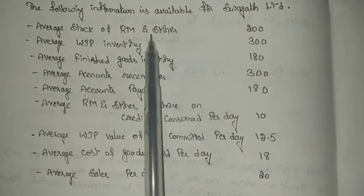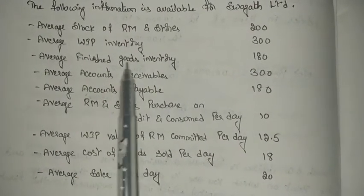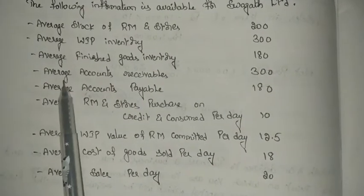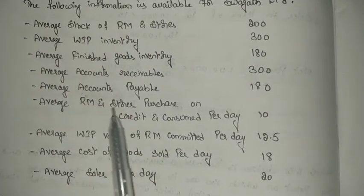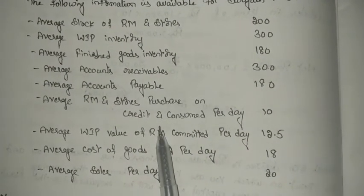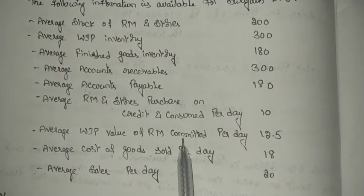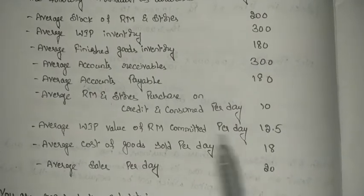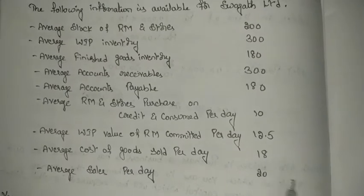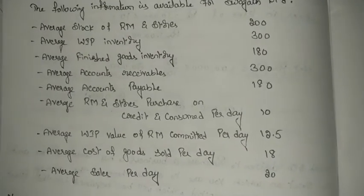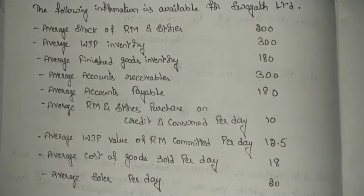The given data includes: average stock of raw materials and stores is 200, work in progress inventory is 300, average finished goods inventory is 180, average accounts receivables is 300, average accounts payable is 180, average raw materials and stores purchased on credit and consumed per day is 10, average work in progress value of raw material committed per day is 12.5, average cost of goods sold per day is 18, and average sales per day is 20.